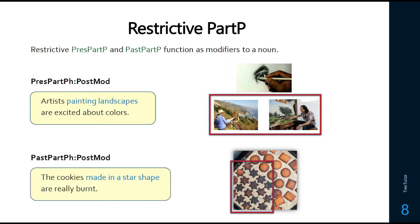Because relative clauses can be restrictive or non-restrictive, present participle phrases and past participle phrases can be restrictive and non-restrictive too. 'Artists painting landscapes are excited about colors' — this is restrictive; we're limiting the set to only those artists painting landscapes, as seen in the picture. Or 'the cookies made in a star shape are really burnt' — we're talking about cookies in general but restricting it to those made in a star shape. We're not saying all cookies are burnt.